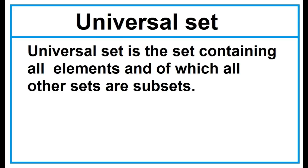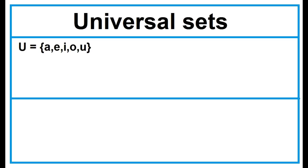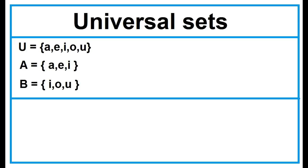Universal Set is the set containing all elements, of which all other sets are subsets. It is represented by a capital letter U. Example: Let U be the universal set — the set of all vowels in the English alphabet. Set A is a proper subset of Set U, and Set B is also a proper subset of Set U. All the elements of Sets A and B are also found in the universal set.